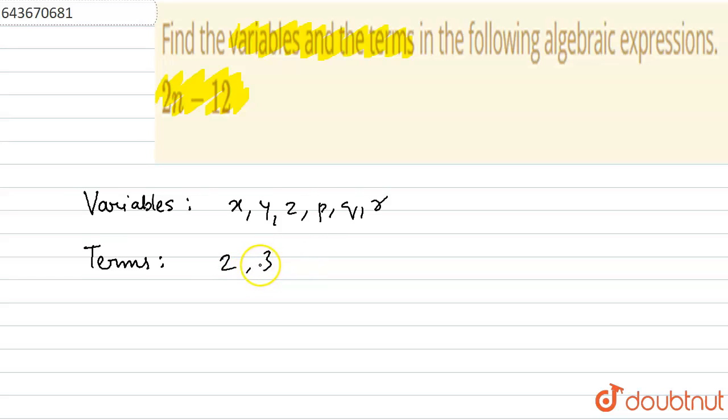And it should be separated by the arithmetic operations - that is addition, subtraction, multiplication, division, etc. We can also add variables here. So here in the given question we have 2n minus 12.